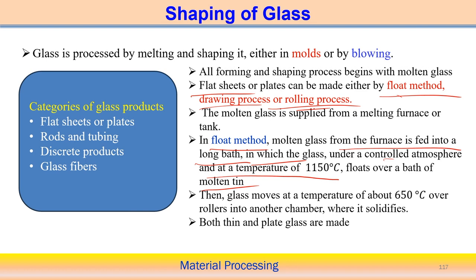The temperature is controlled at 1150 degrees centigrade. Once that is done, the glass then moves at a temperature of around 650 degrees centigrade over the roller, and then it is taken into another chamber where it is solidified. Therefore, thin plate glass can be produced using this particular operation.